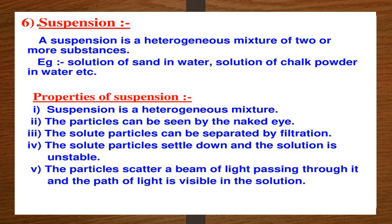Suspension is defined as a heterogeneous mixture of two or more substances. Examples include sand and water, chalk powder and water. Its properties are: it is a heterogeneous mixture; particles can be seen by the naked eye; solute particles can be separated by filtration; solute particles settle down; the solution is unstable because particles settle at the bottom; and the particles scatter the beam of light, making the path of light visible.